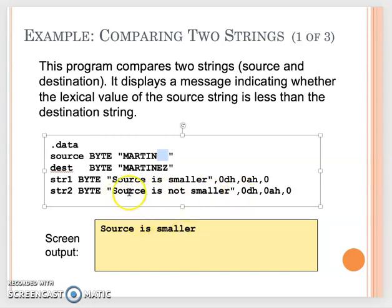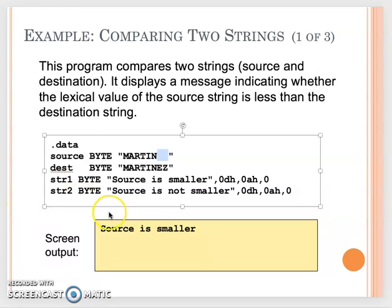So you can guess how we should do it. You will have your source offset point to ESI, and the destination point to EDI. ECX will be the length of either one. Then we will use REPE to repeat — because we need to see if they are equal, we just continue. Once we see they are not equal, then we can do the conditional jump.